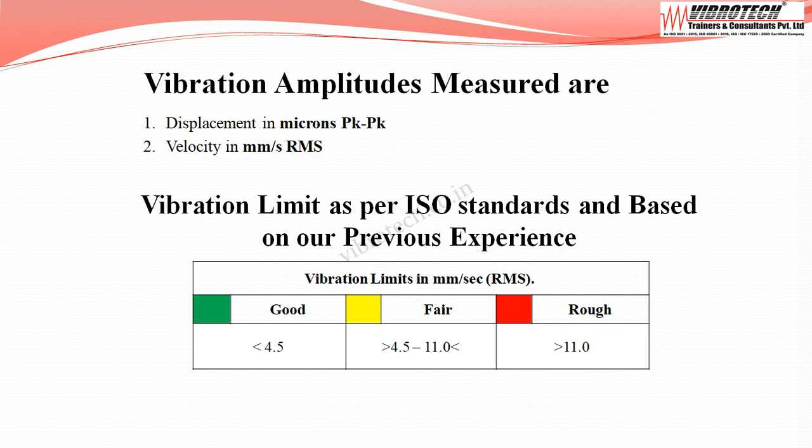Now, the vibration limits: as per ISO standard and with previous experience, when the velocity falls below 4.5 mm/s rms it is considered good; between 4.5 and 11.0 mm/s rms it is considered fair; and above 11.0 mm/s rms it is considered rough.